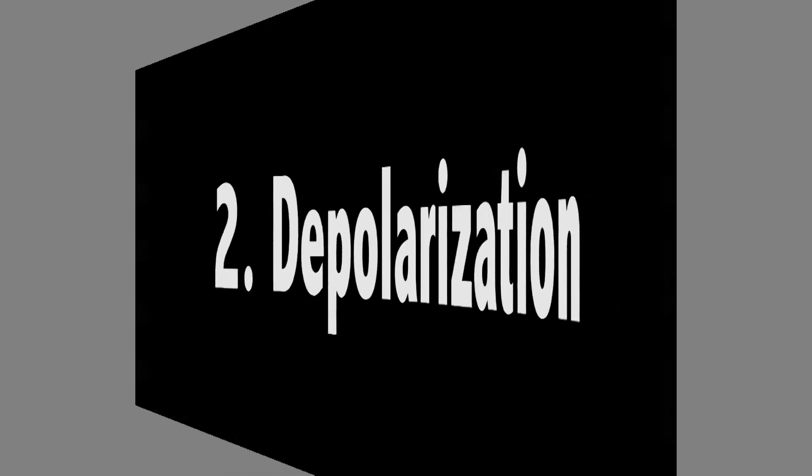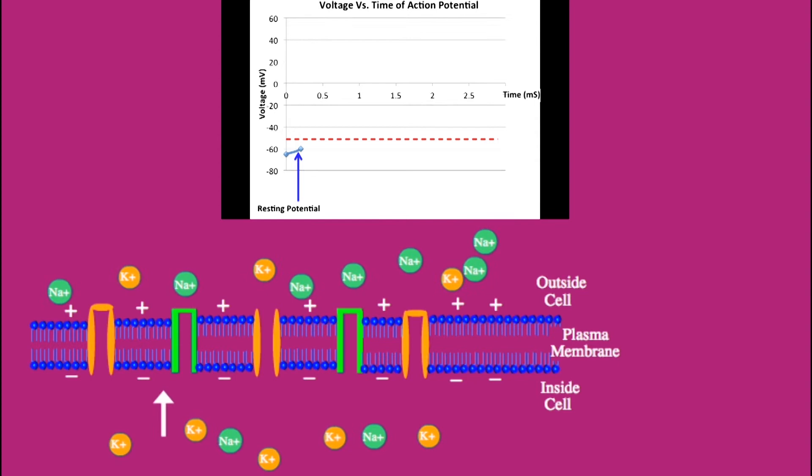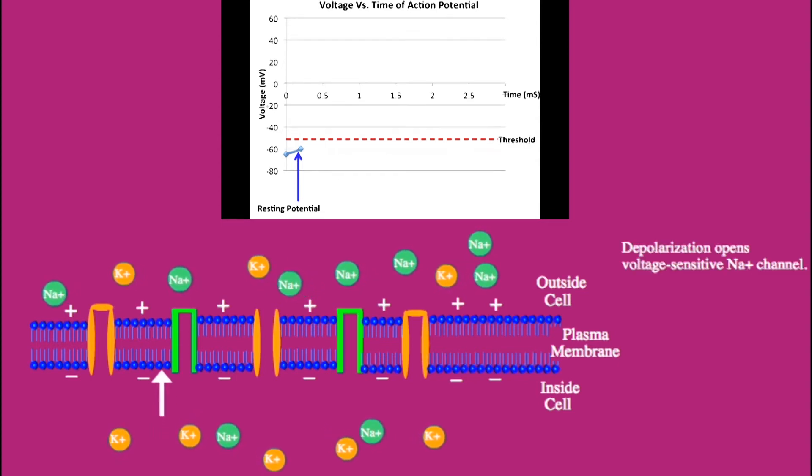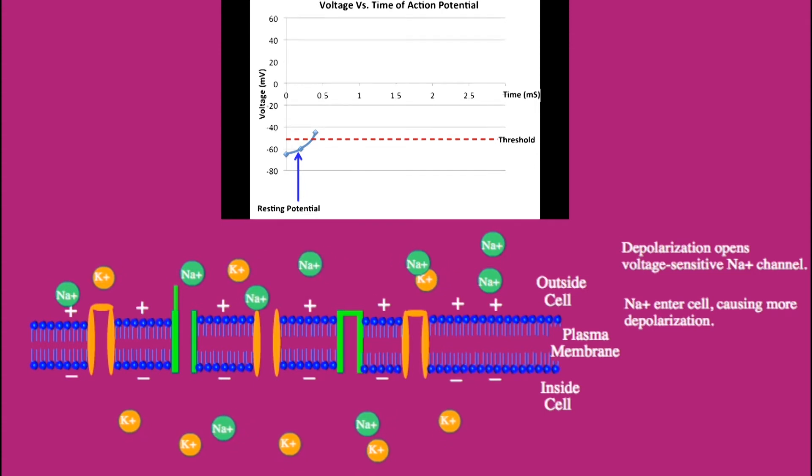Depolarization. Depolarization is initiated by a stimulus which makes the membrane potential more positive causing the voltage sensitive sodium ion channels to open. So the sodium ions flow into the cell down the sodium concentration gradient causing more depolarization.